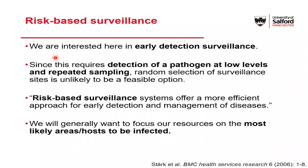Early detection surveillance requires detecting a pathogen when it's still present at really low levels, with a surveillance scheme that's continually looking. Randomly selecting where to look isn't really going to be an option — it requires huge numbers of samples to detect at very low prevalences, and doing it again and again obviously increases the cost. So we're going to look at what we call risk-based surveillance: a more efficient approach where we consider that not every site or host is equal in value for surveillance, and we want to identify which hosts or sites to target, focusing on those most likely to be infected.